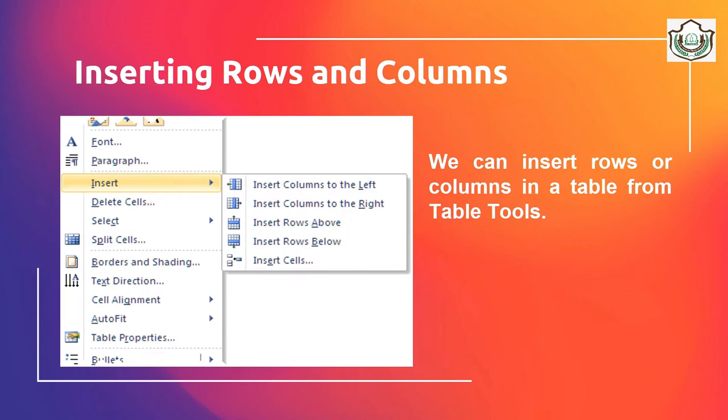You can insert rows or columns in a table from the Table Tool. To insert rows or columns, click on the Layout tab in the Table Tool. Select a row or column where you want to add an additional row, column, or cell. In the Row and Column group, click the desired option: Insert Column to the Left, Insert Column to the Right, Insert Rows Above, Insert Rows Below, or Insert Cell.